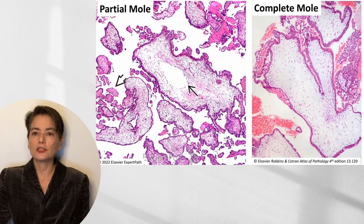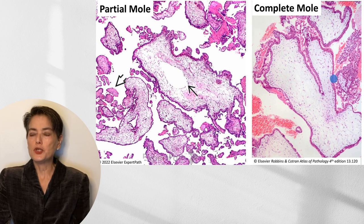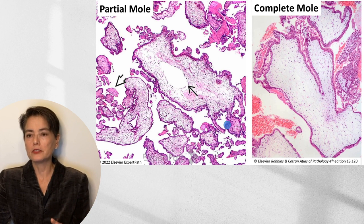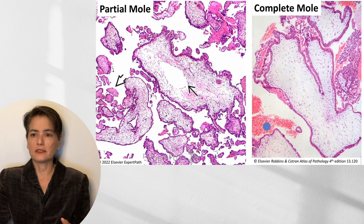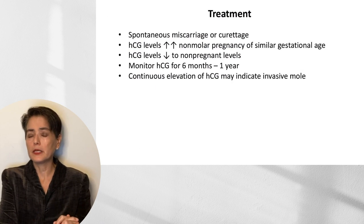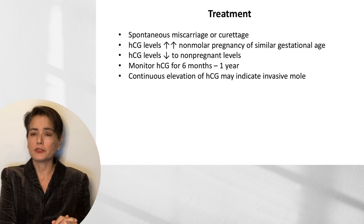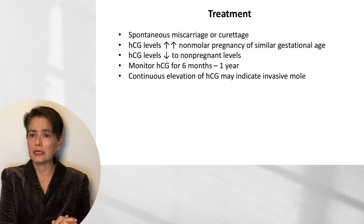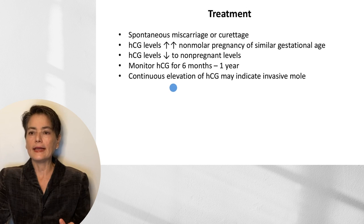To summarize the comparison: the partial mole has two populations of villi, whereas in a complete mole all villi are enlarged and hydropic, with variable trophoblastic proliferation. Treatment is typically with curettage, and many patients present with a spontaneous miscarriage. HCG levels are higher than in a non-molar pregnancy of similar gestational age. Following miscarriage or curettage, HCG levels will fall to non-pregnant levels. It is important to monitor HCG for six months to a year, because if levels do not decrease, this can indicate an invasive mole.